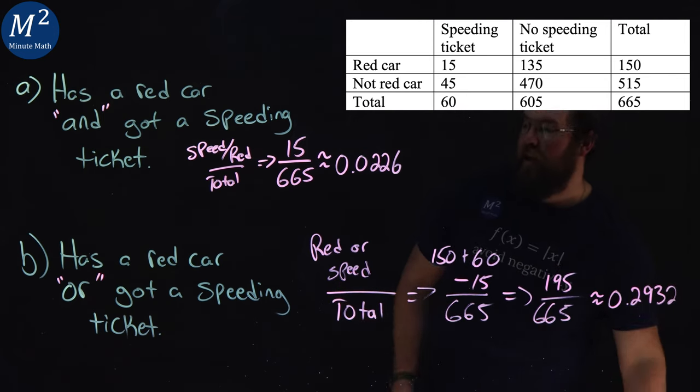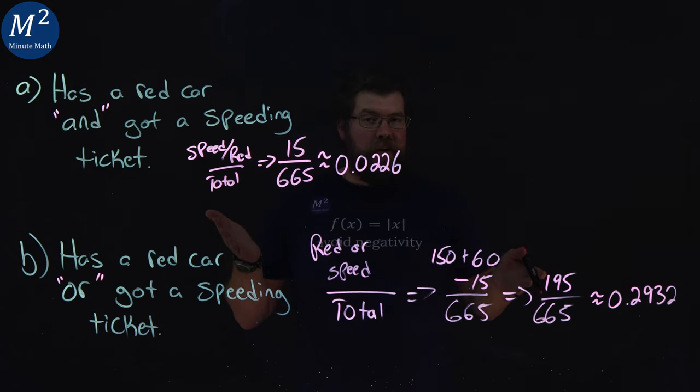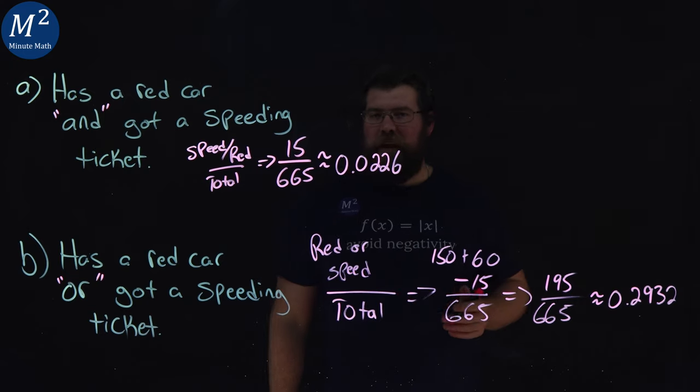So that's the probability that they had a red car or had a speeding ticket. I hope you learned something here, and as always, thanks for watching.